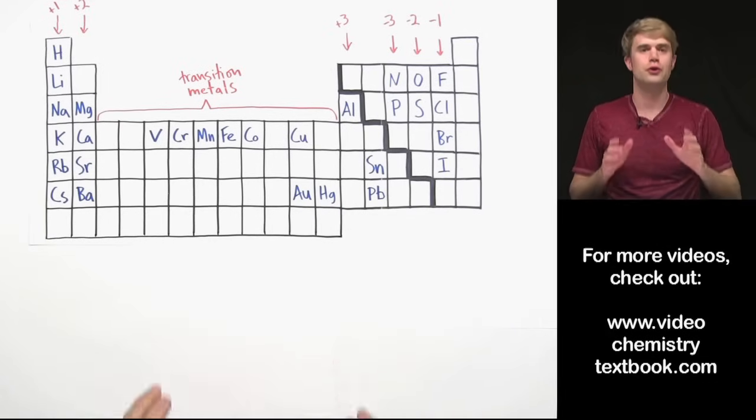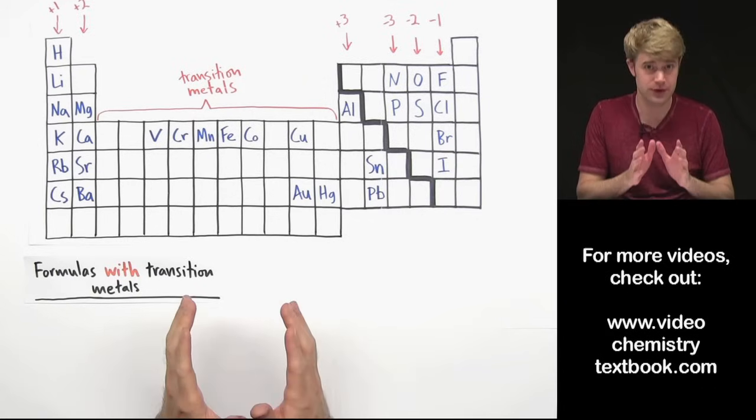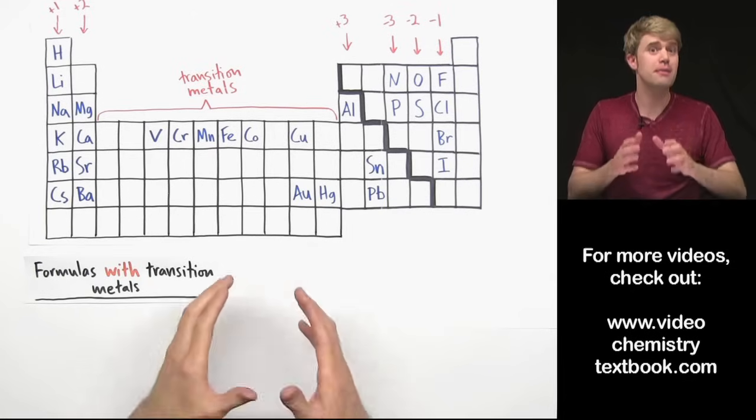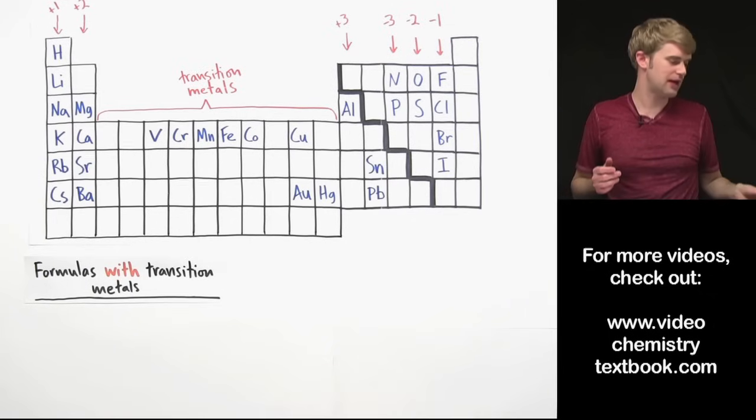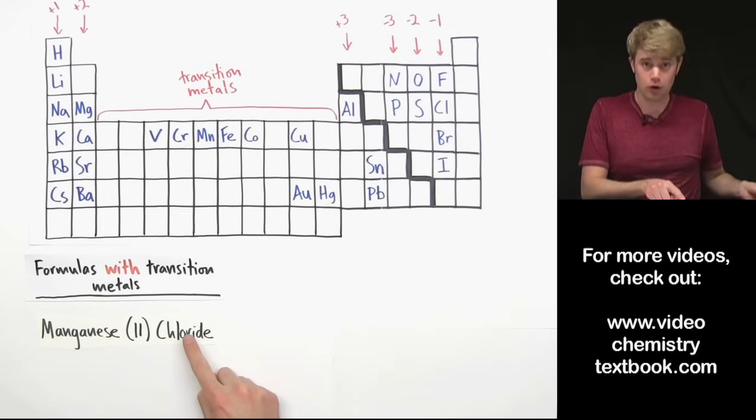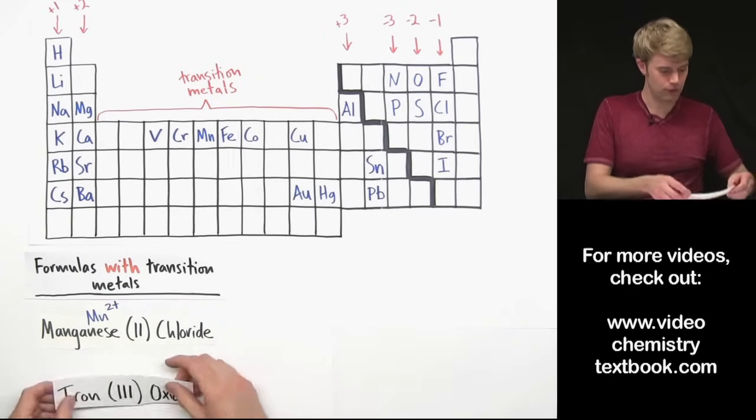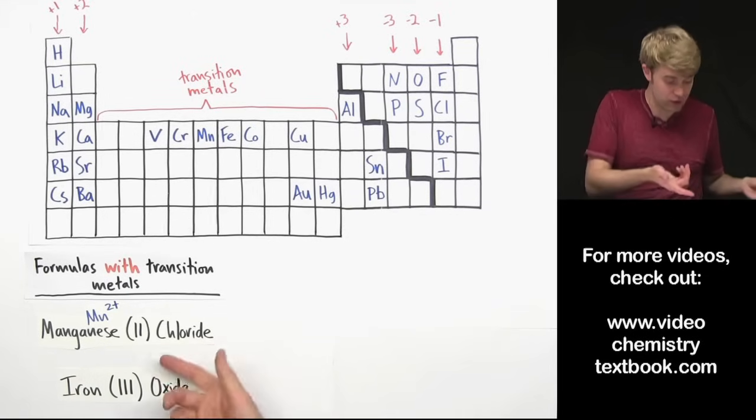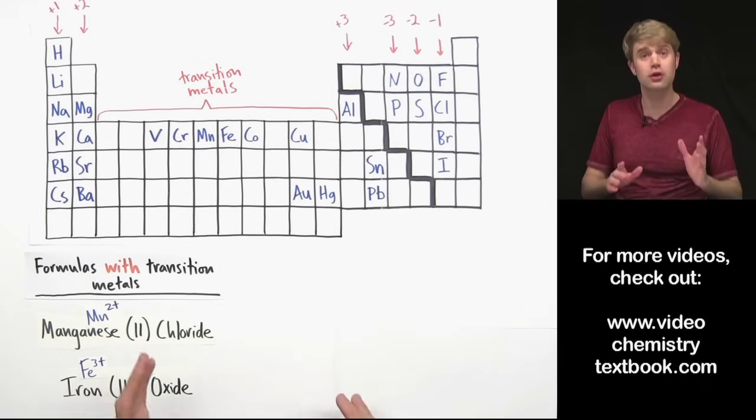So we're going to use this Roman numeral notation whenever we write formulas with transition metals because we have to explicitly say what charge the metal has because we can't just figure it out based on where it is on the periodic table. So we have to say manganese(II) chloride for a compound that contains Mn2+. For iron(III) oxide, we write that so that whoever is reading it knows that we're talking about a compound that contains iron with a 3+ charge.